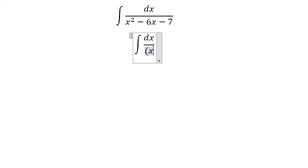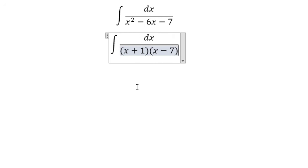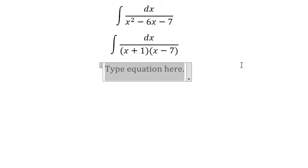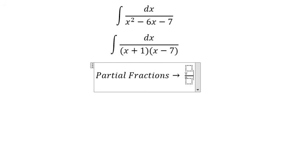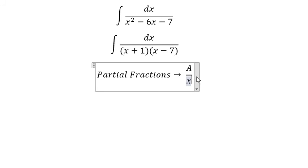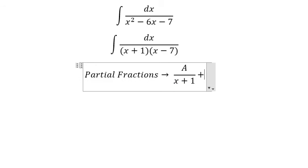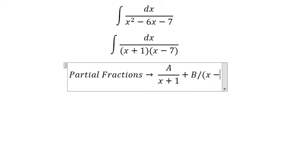In here we have x plus one and x minus seven. Next we need to use partial fractions, so we write capital A over x plus one and capital B over x minus seven.